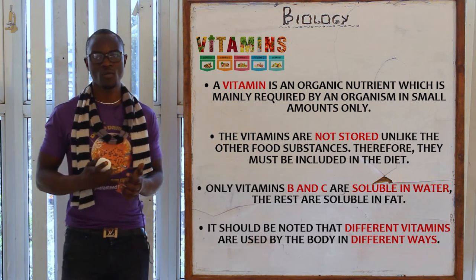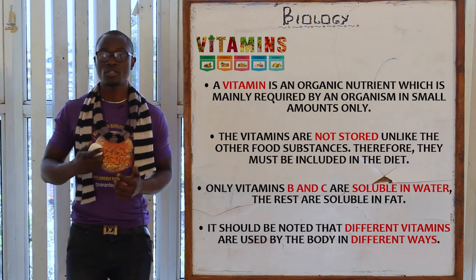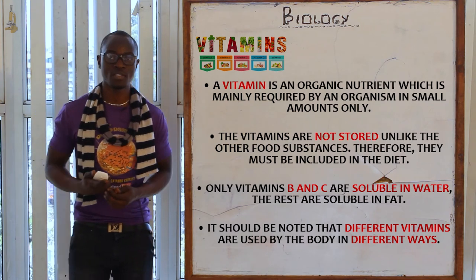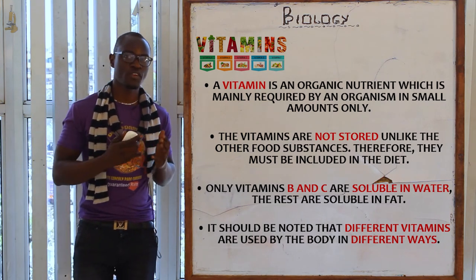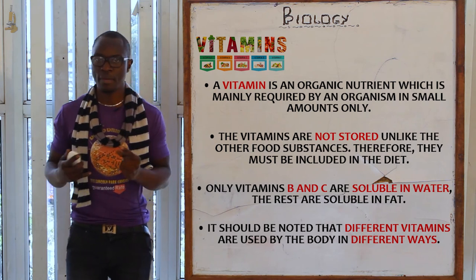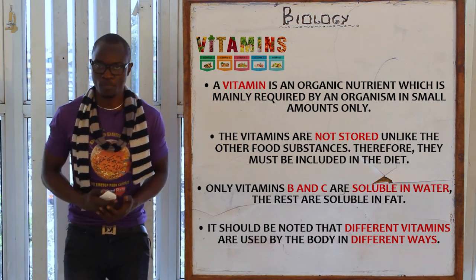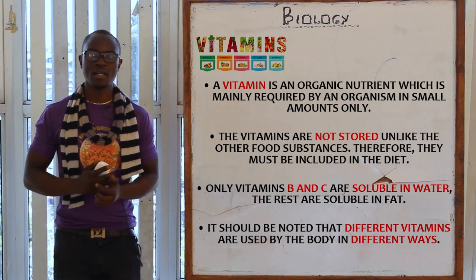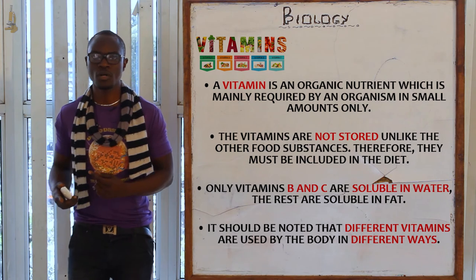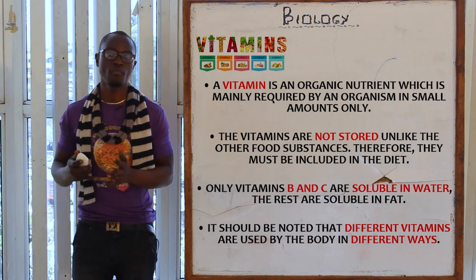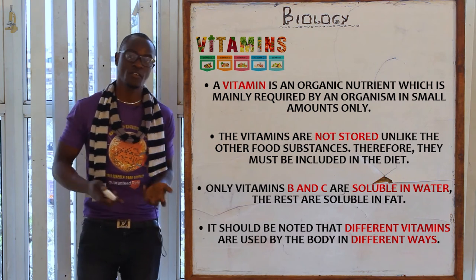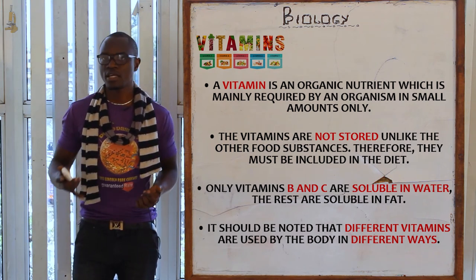Vitamins are organic nutrients required by an organism in small amounts. They are not stored and must be included in the diet. If you eat a lot of fruits, know that most of the vitamins are going to waste, as vitamins are only required in very minute amounts to help the body function. Vitamins B and C are soluble in water, while all other vitamins are soluble in fat and insoluble in water.